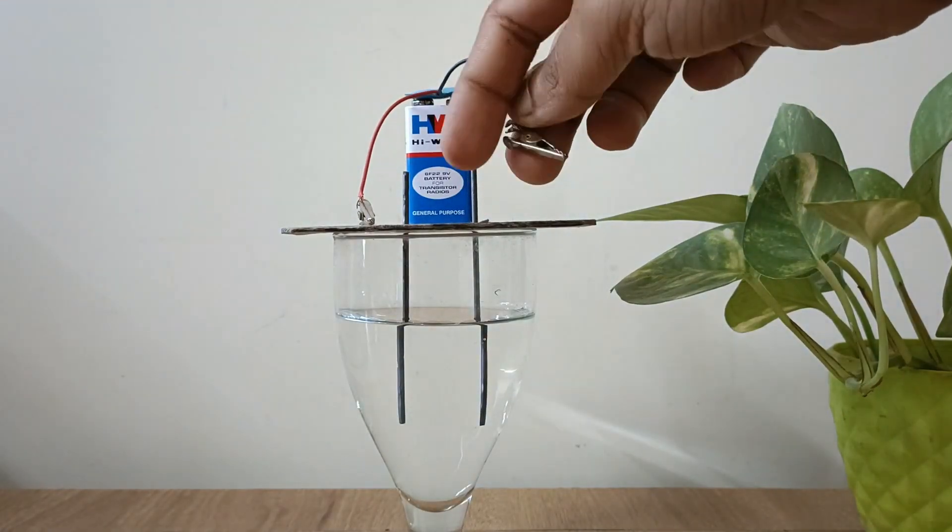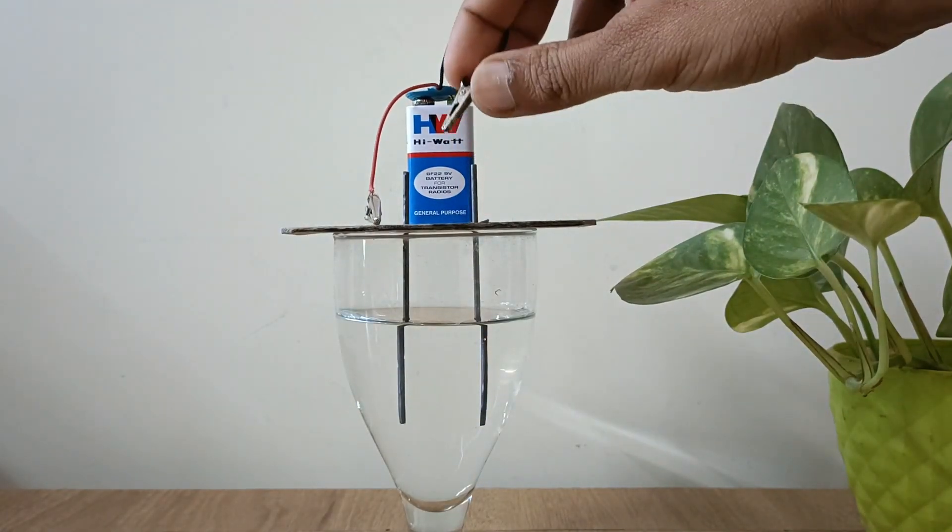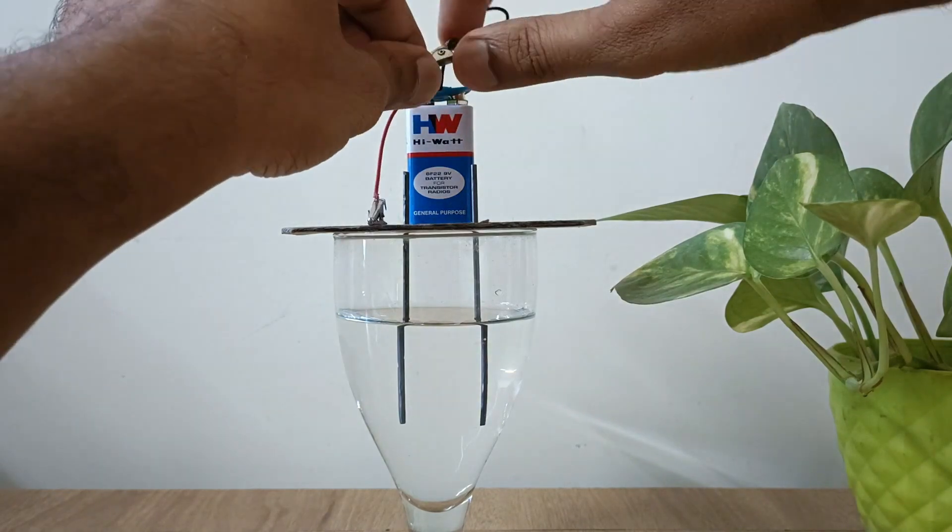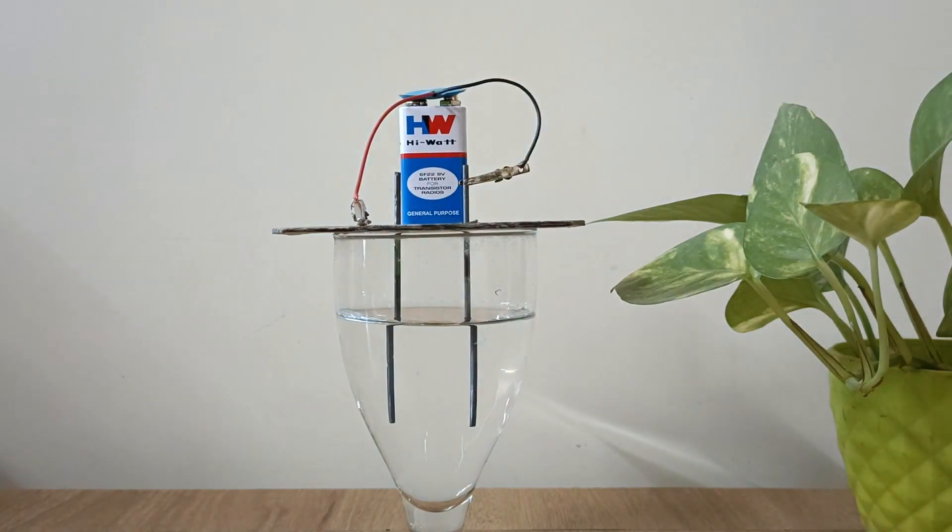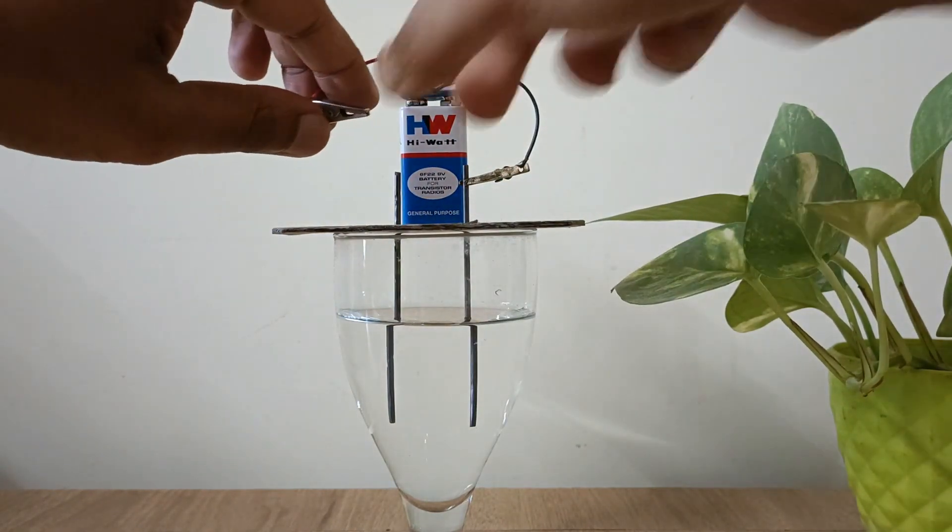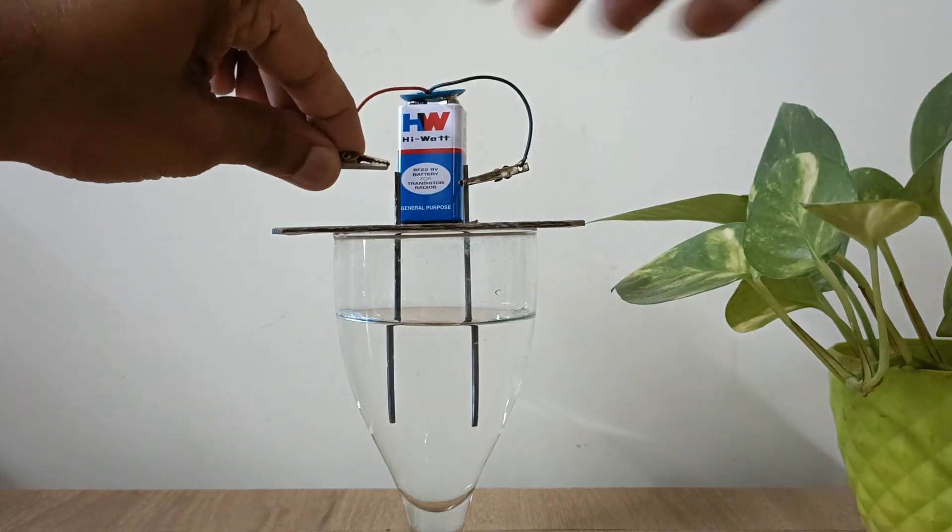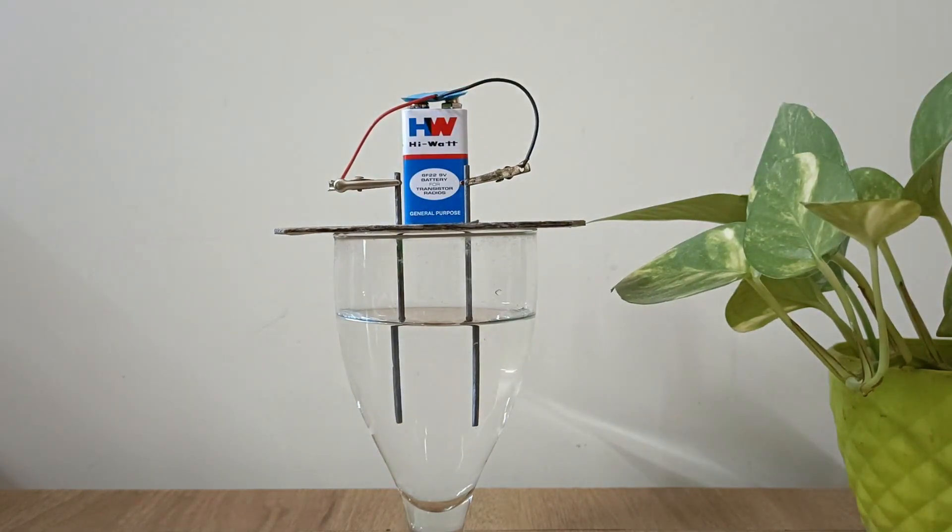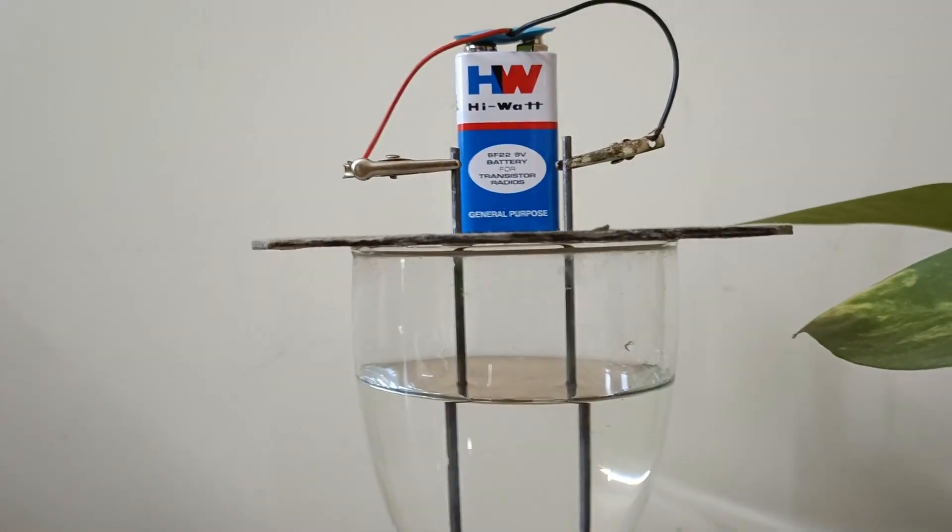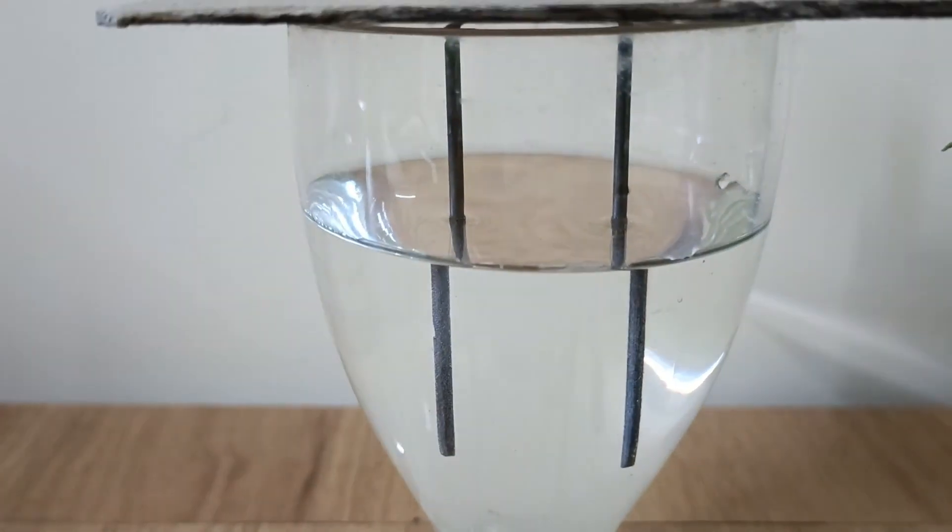Let's place the battery on the cardboard and connect both terminals of the battery to the respective electrodes. The graphite rod connected to the negative terminal is the cathode and the one connected to the positive terminal acts as the anode. You can very well see that the reaction immediately starts.